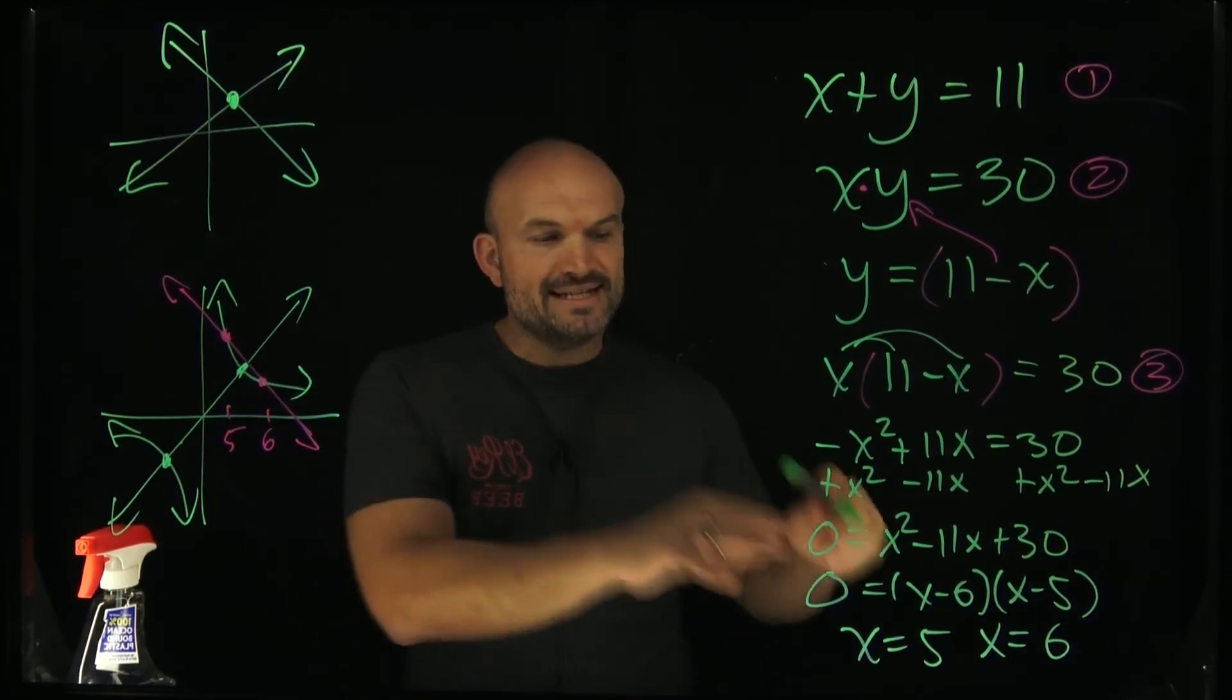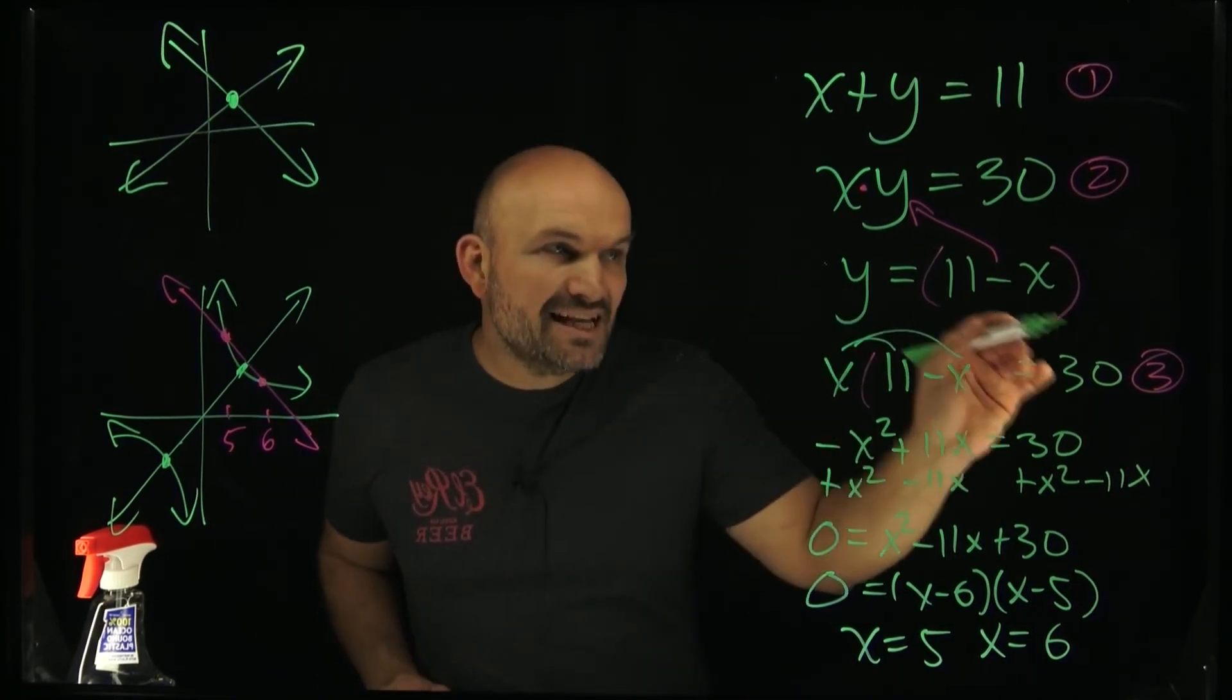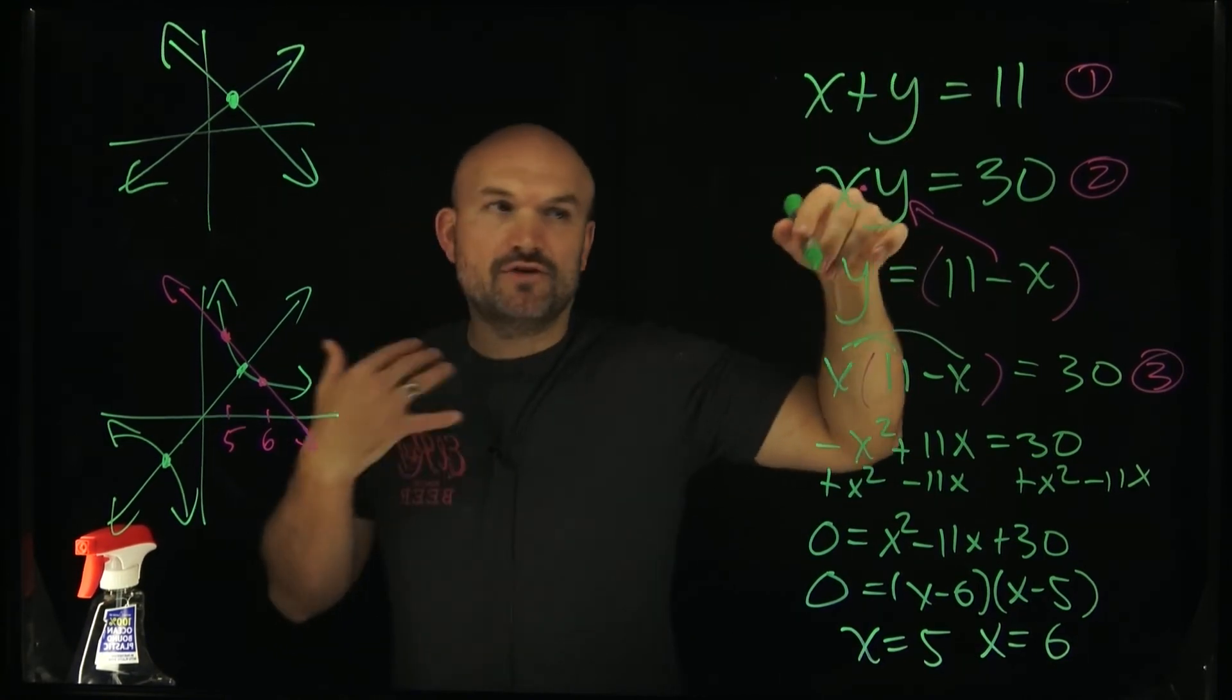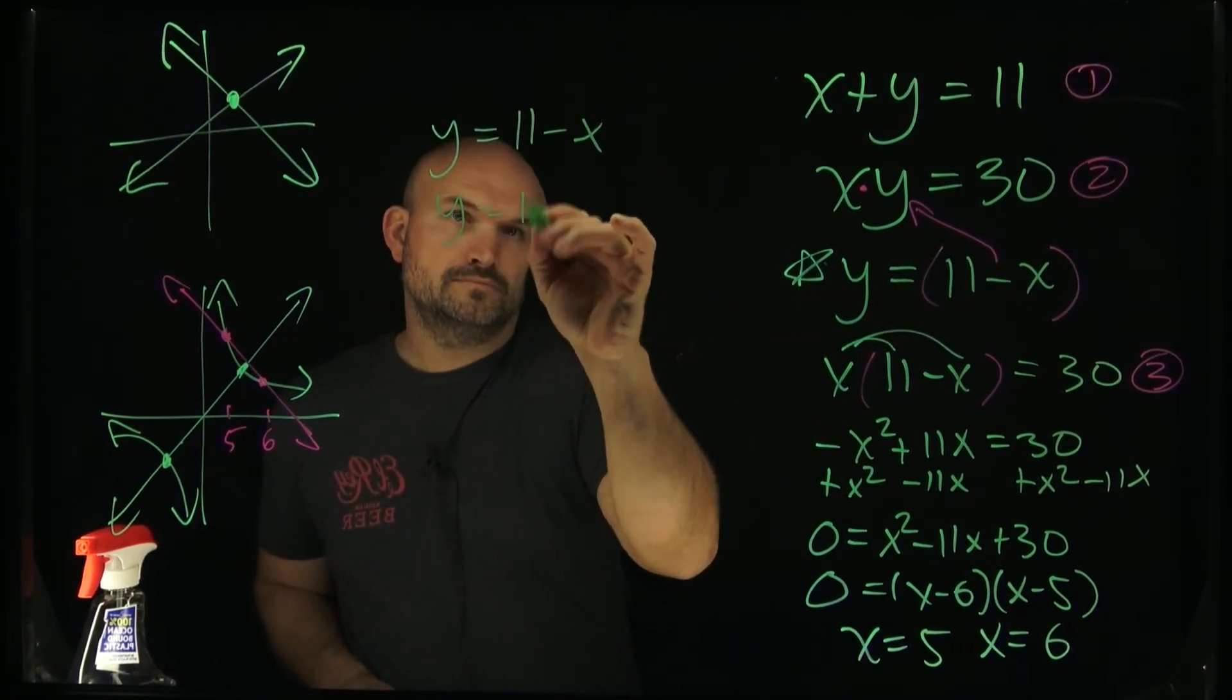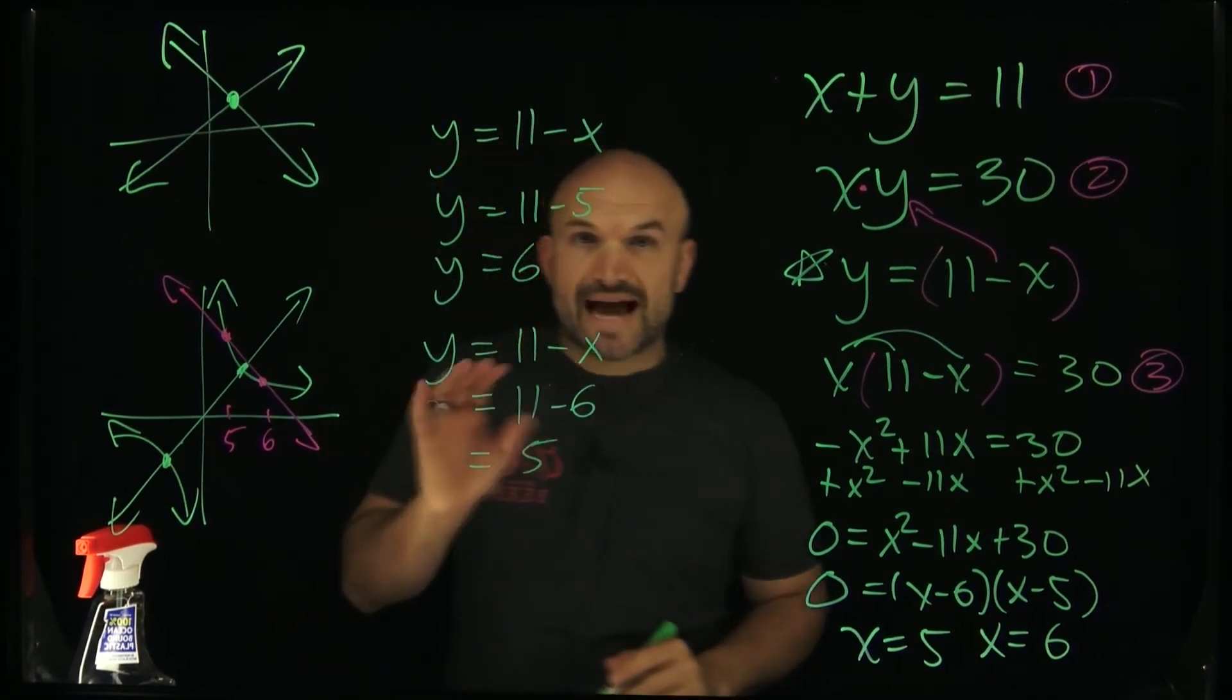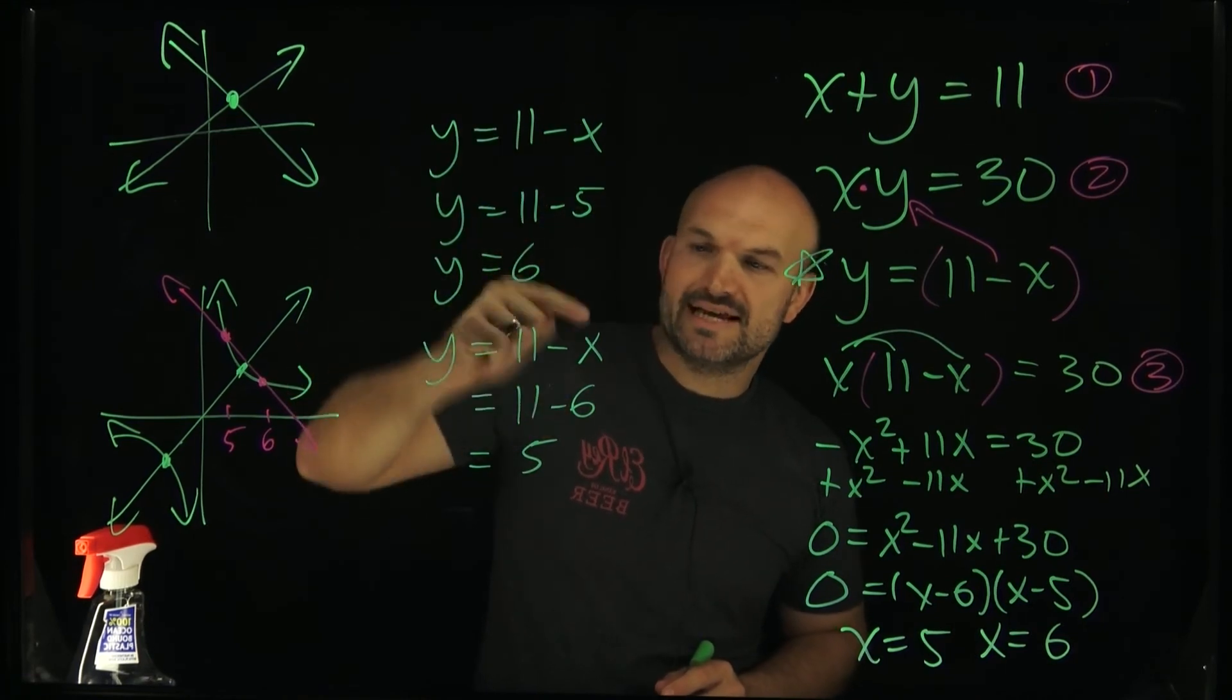So what we need to do now is take these values of x and plug them into y. And thankfully, by actually taking equation number one and already rewriting it, solved for y, I can now just take these values and plug them in. So now what I've done is I took my y, I plugged 5 in for x, and I plugged 6 in for x.